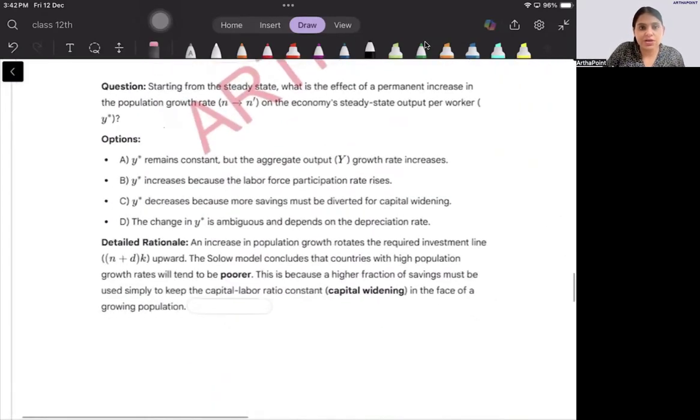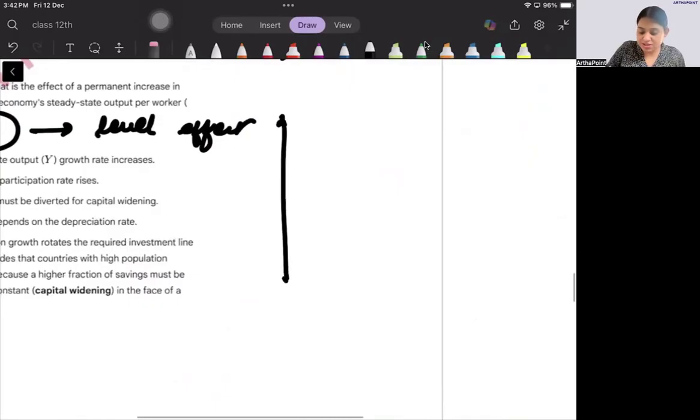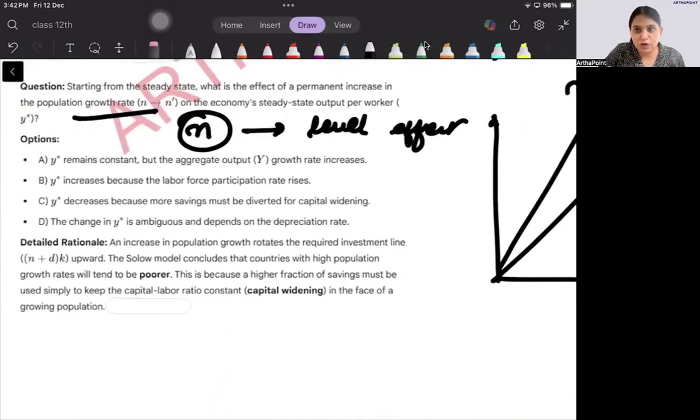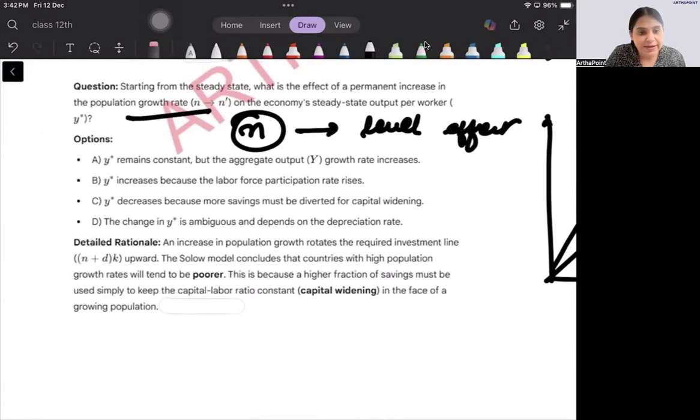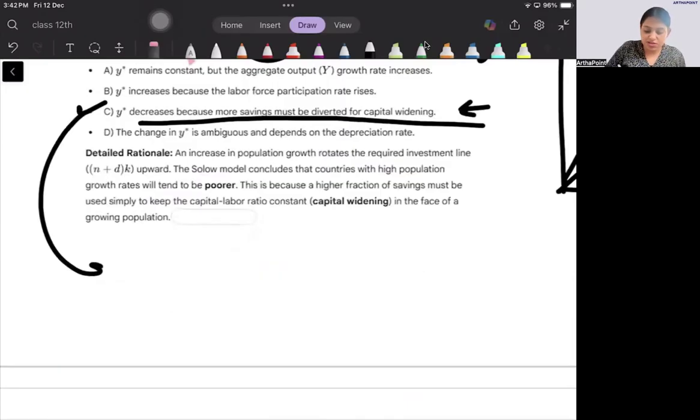Starting from steady state, what is the effect of permanent increase in population growth rate? Again, n will have a level effect. When we draw this line n plus delta, when n increases this will shift upwards and it will decrease the level of your equilibrium output. So the answer will be C: Y star decreases because more saving must be diverted to capital widening. Very interesting, please read this thoroughly. This will come in exam. What is capital widening? You should know this very well.